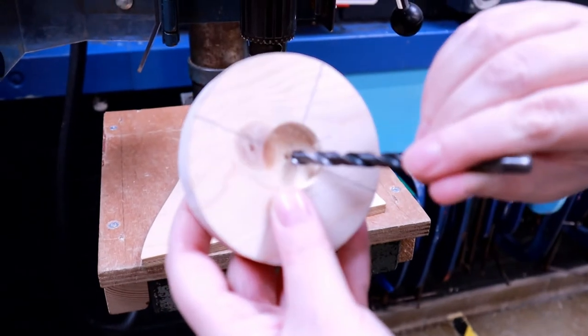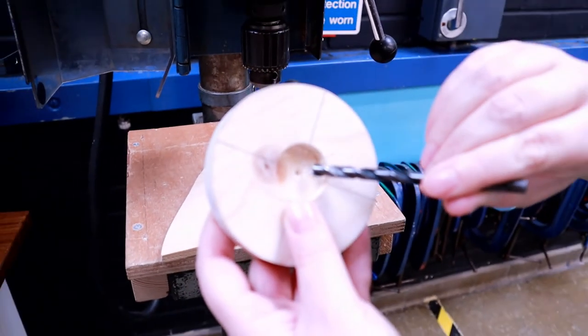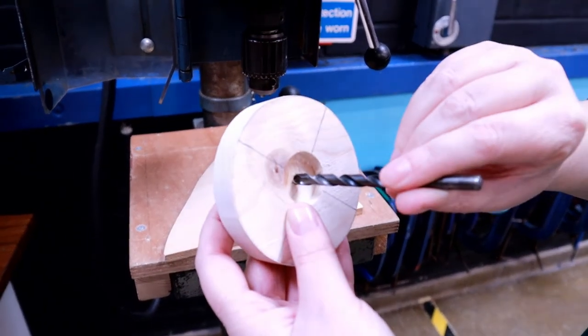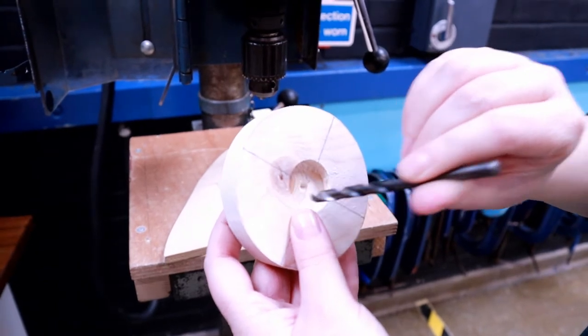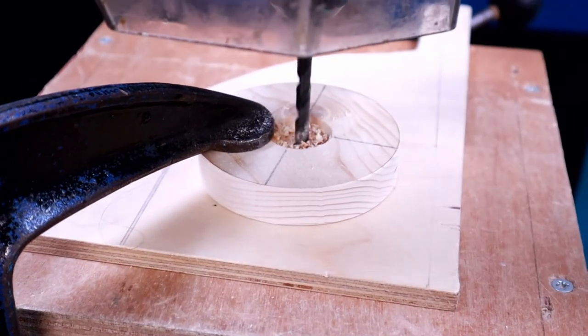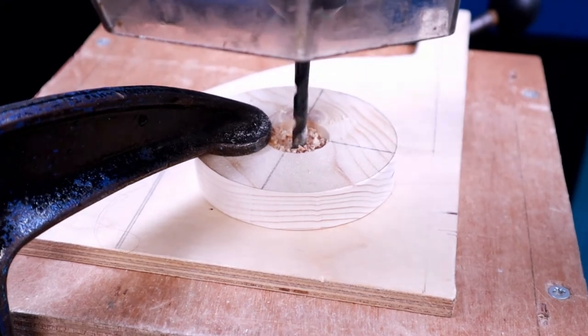The forstner bit has left an indentation right in the center. You can use this as a guide for your next bit of drilling. So you now need to use the twist bit to drill all the way through your bit of pine.